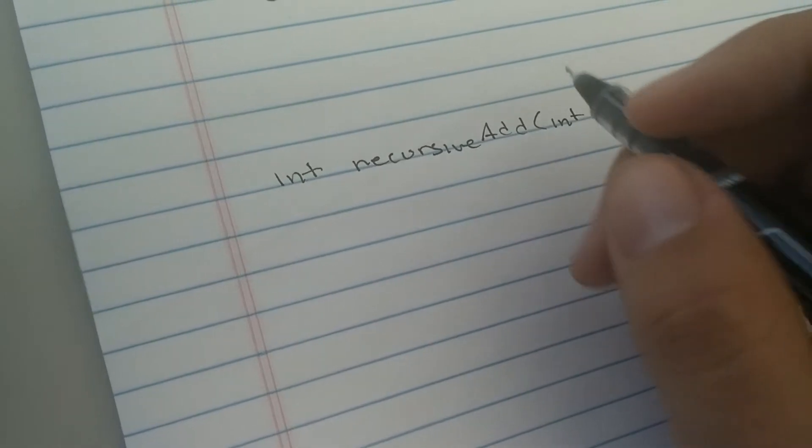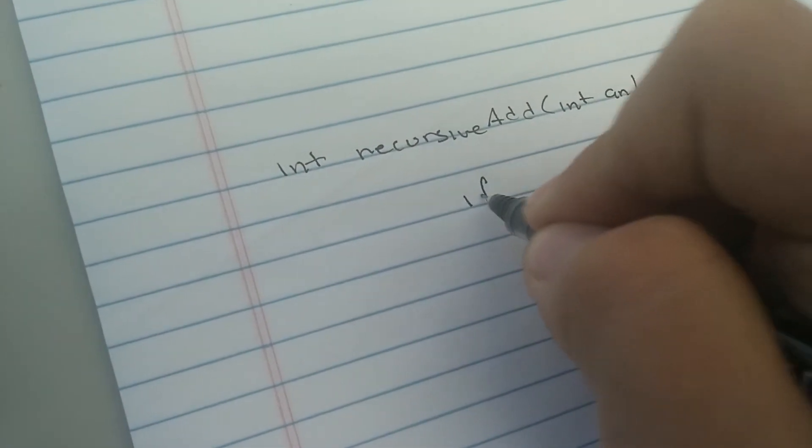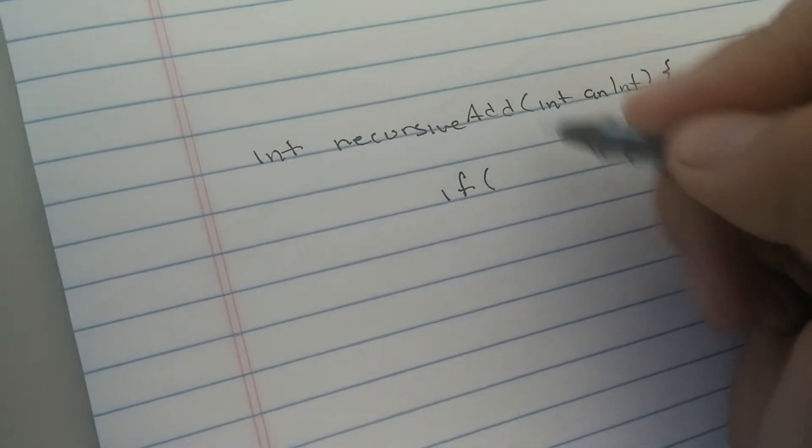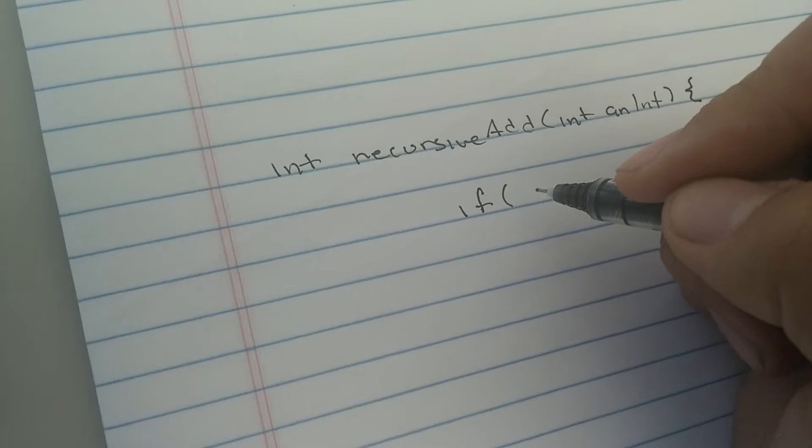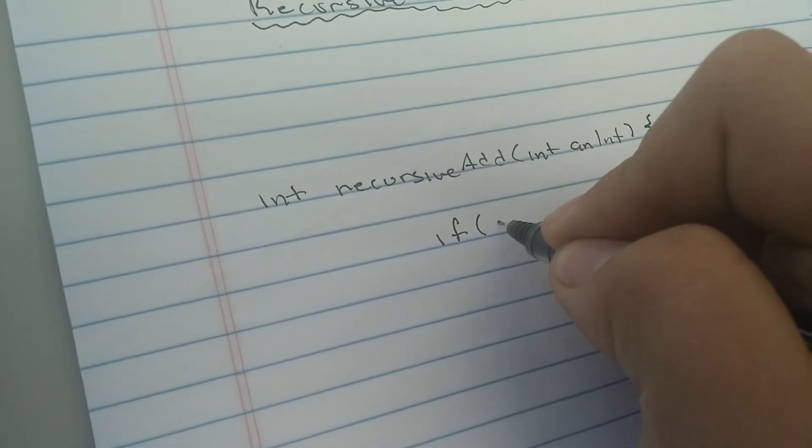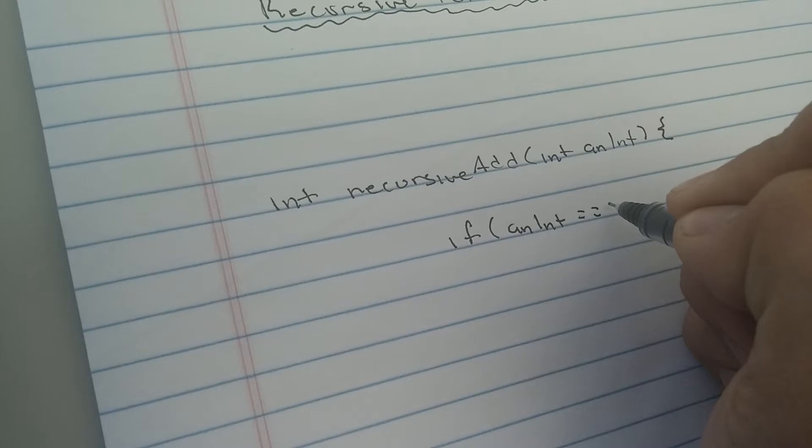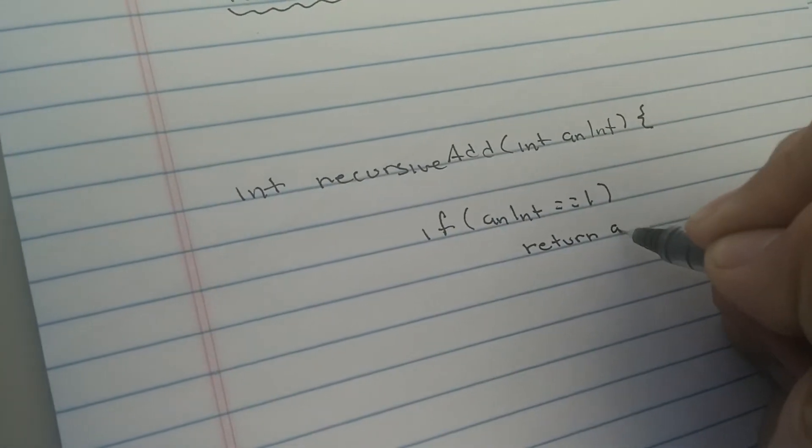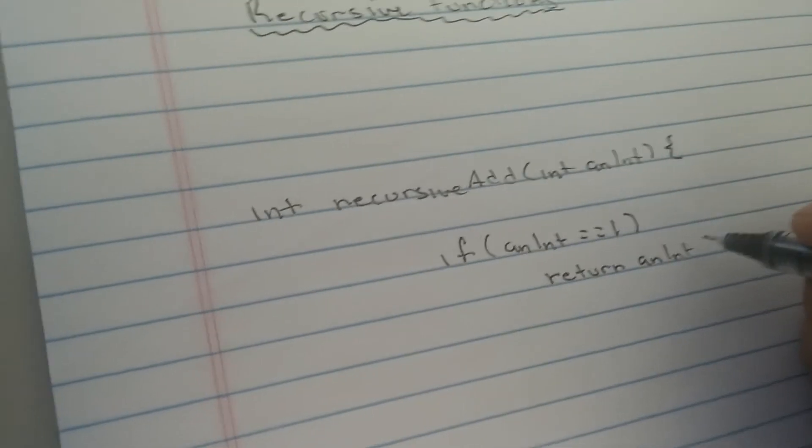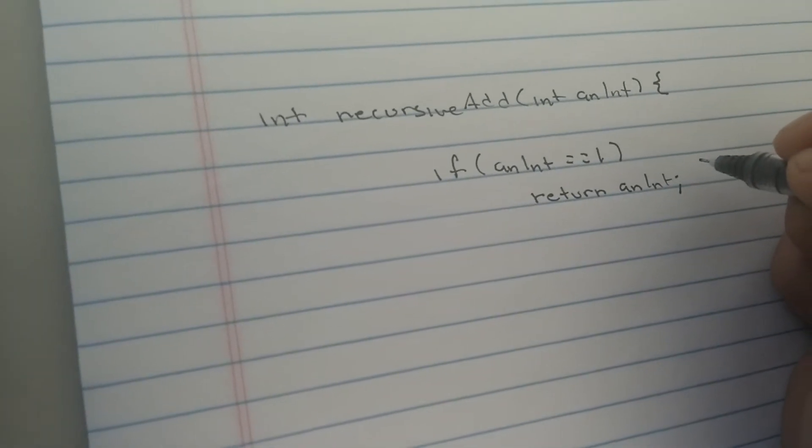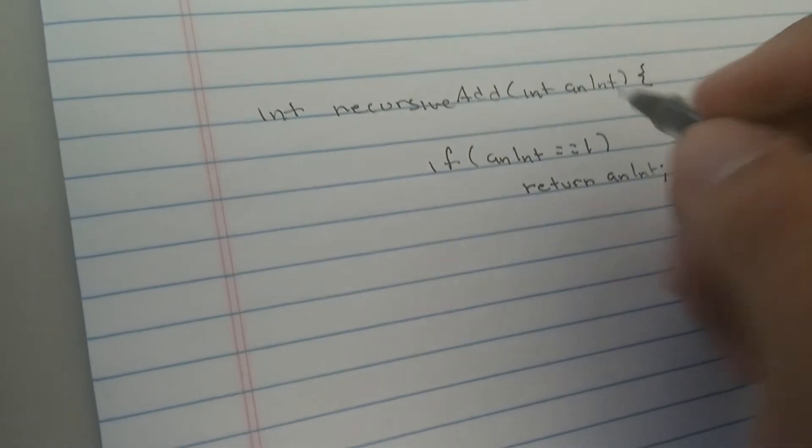So, with recursive functions, we're going to have an if-else statement inside. And with the if, we want there to be some base value that when the value of whatever variable is being manipulated by the function, when it reaches this value, we're going to return a number. We're going to return something besides the function itself. So, this is like the escape clause. So, in this case, we're going to want to say if an int equals 1, we're going to return an int. Because at that point, it's going to be a 1.